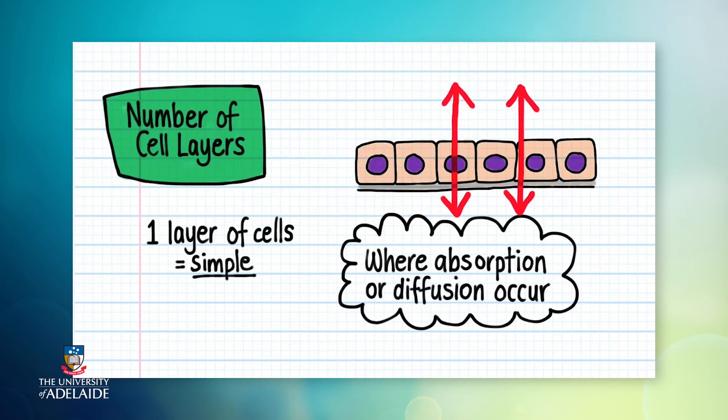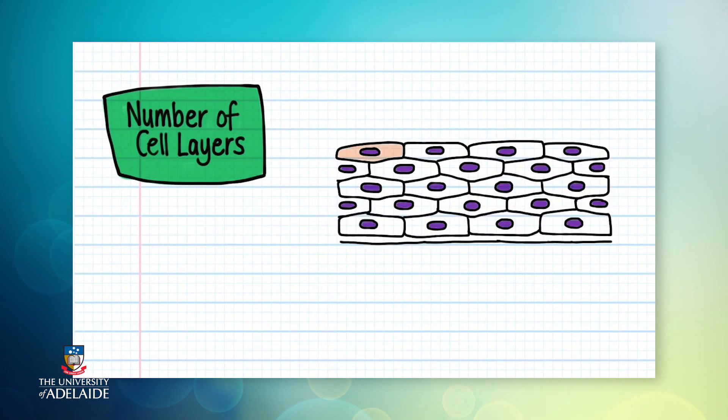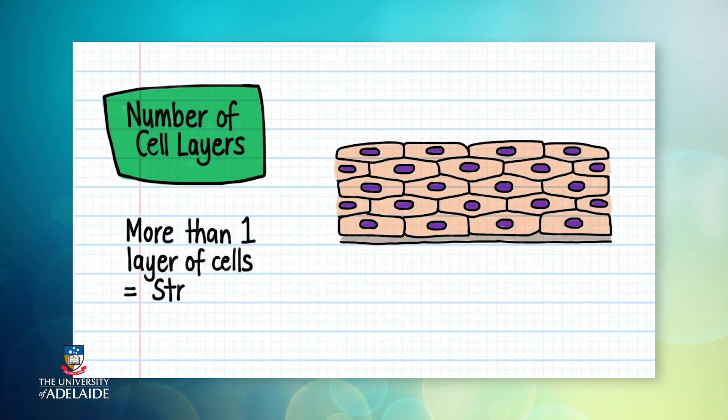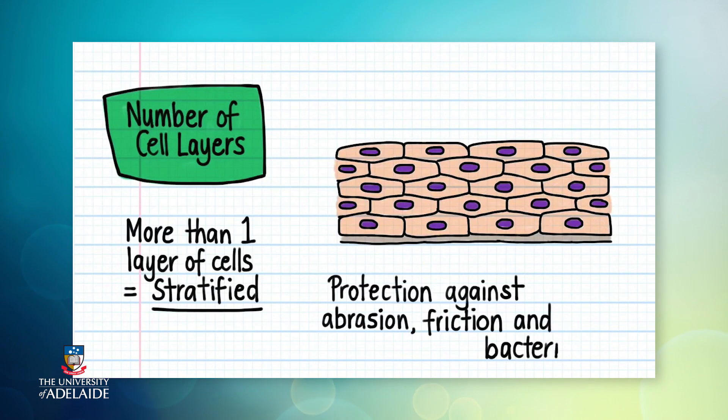If more than one layer of cells is present, we call the epithelium stratified. Stratified epithelium is located in regions where we need protection against abrasion, friction and bacteria, like for example, the skin.